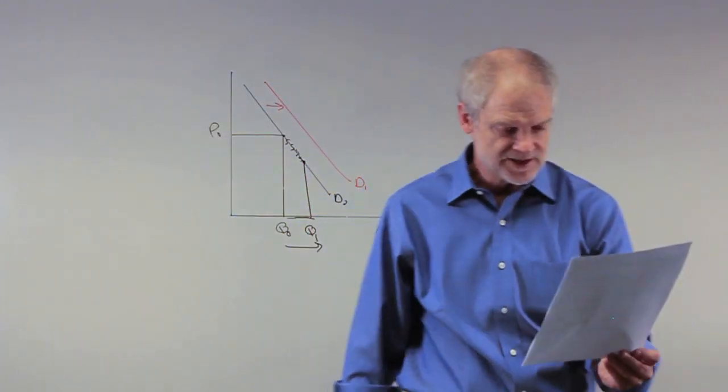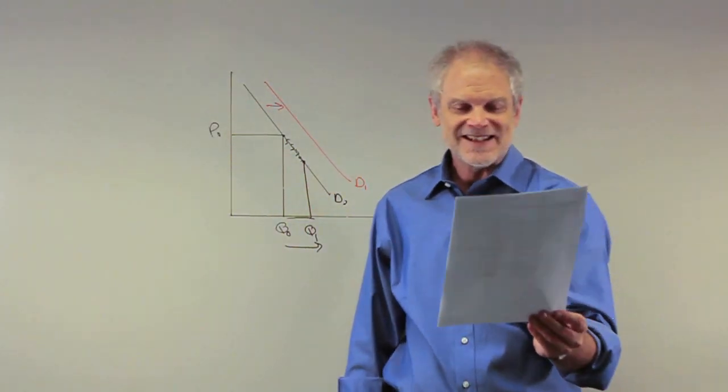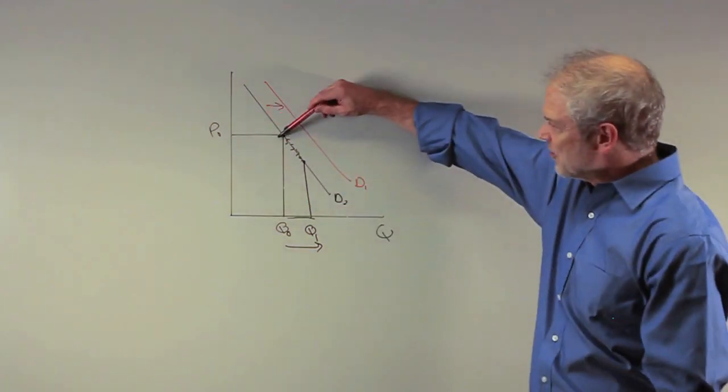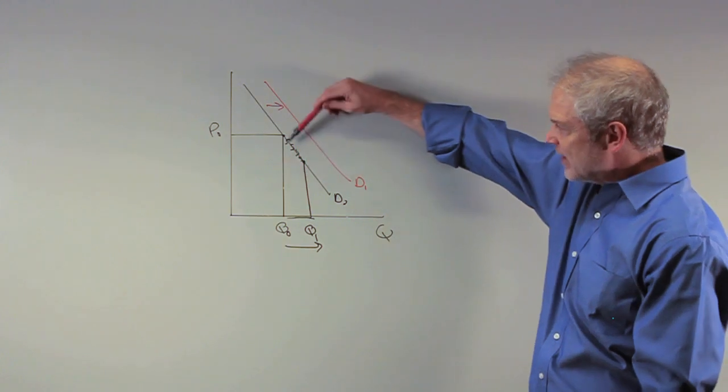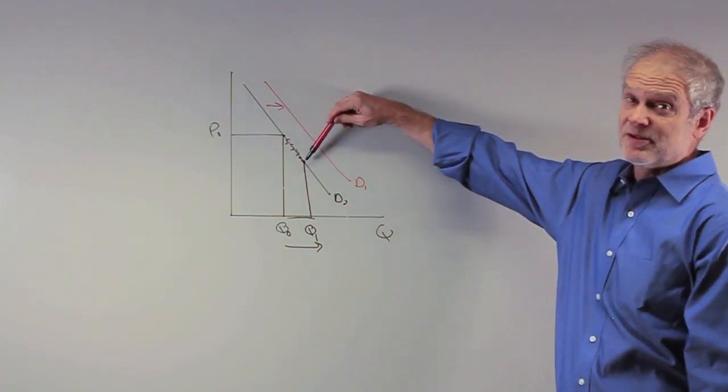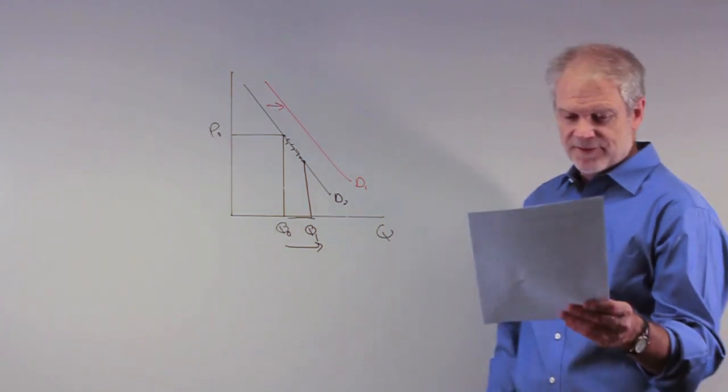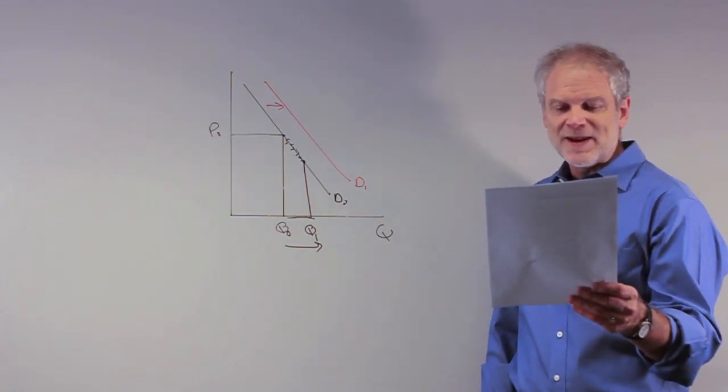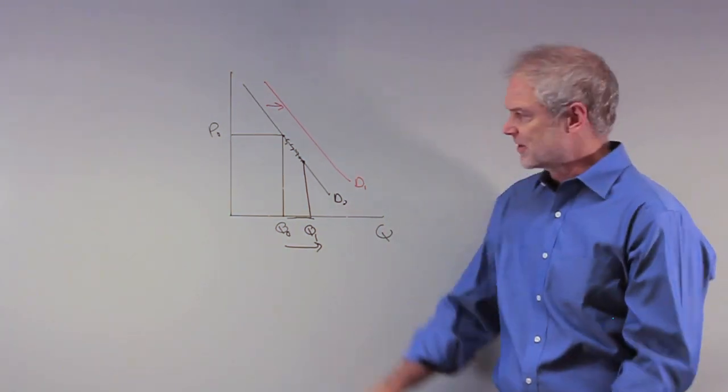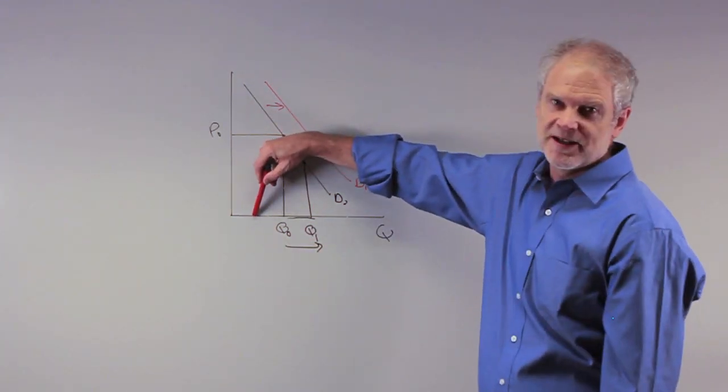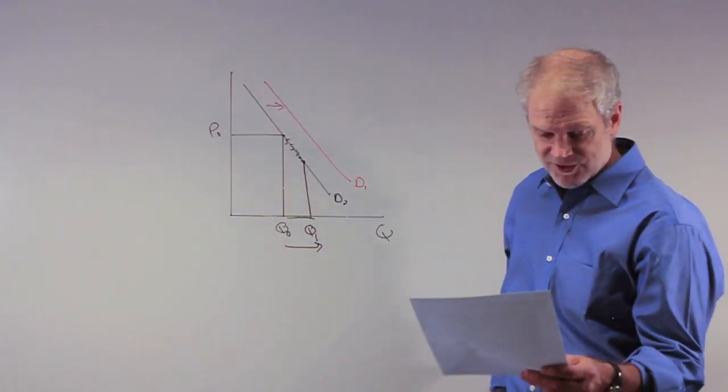Look at our answers now. It says results in a movement downward and to the right along a fixed demand curve. Absolutely correct. So A is going to be our answer. But let's make sure you understand why. B results in a movement upward and to the left along a fixed demand curve. Well, that would be a decrease in quantity demanded. Can't be the right answer.